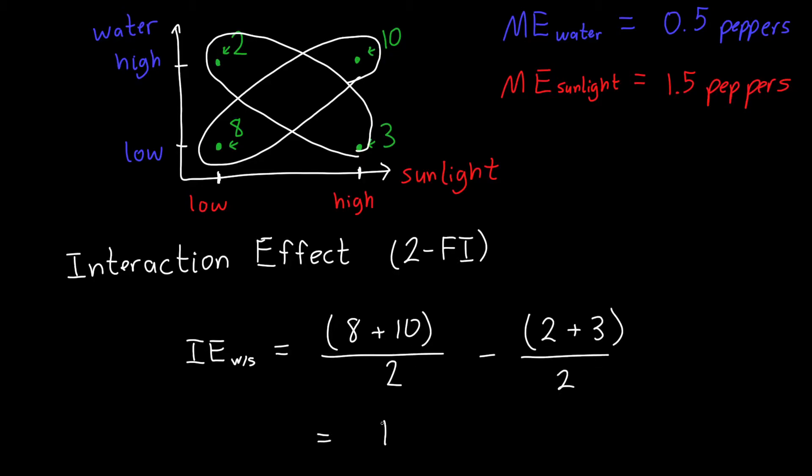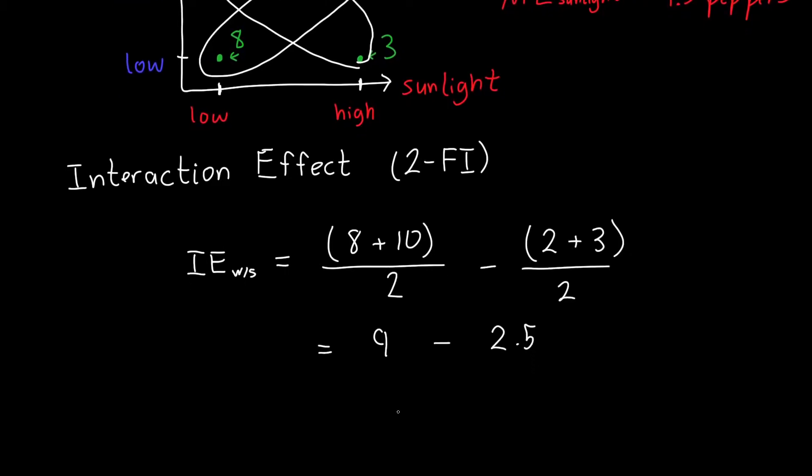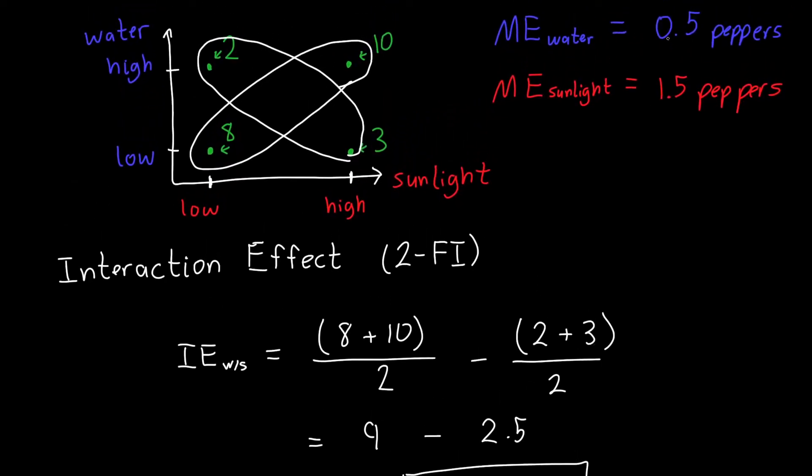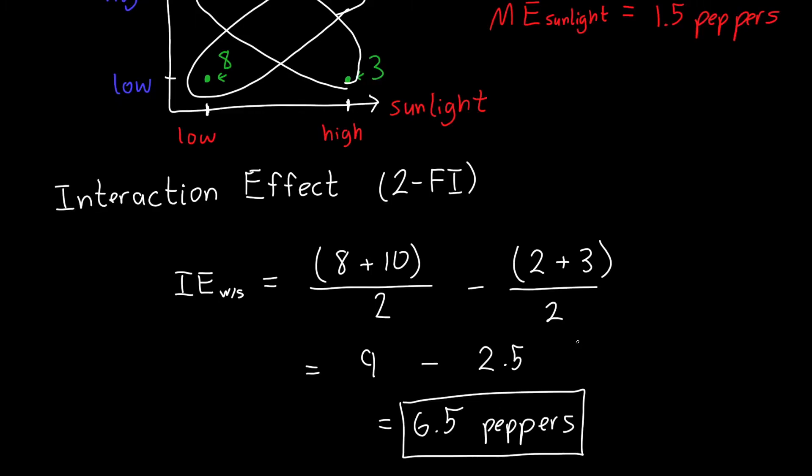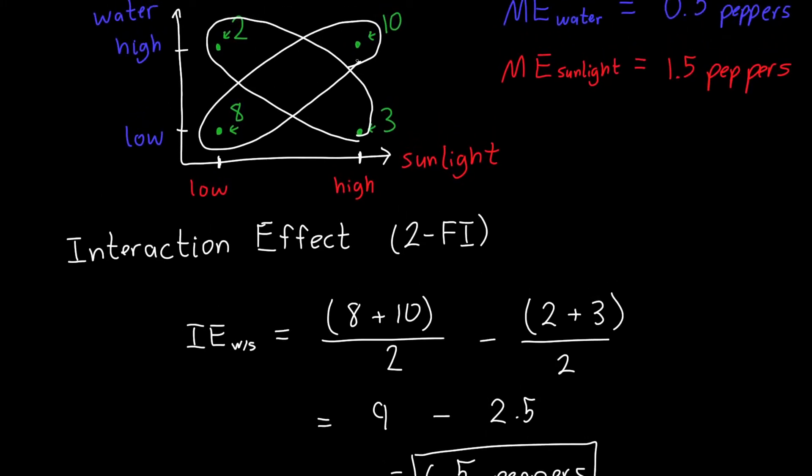it looks like we get 18 over two, so nine minus five over two, 2.5, or 6.5 peppers. And so this is dramatically larger than our main effects that we computed previously of 0.5 and 1.5 peppers. And it should be because this experiment has a pretty dramatic difference in the four experimental conditions.